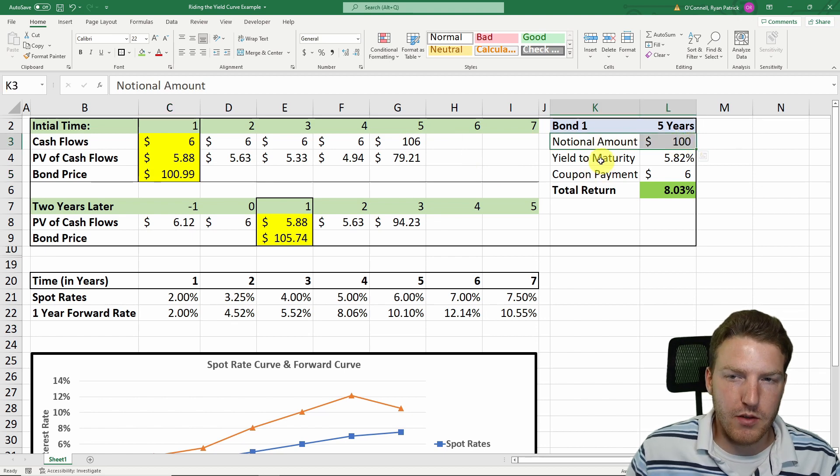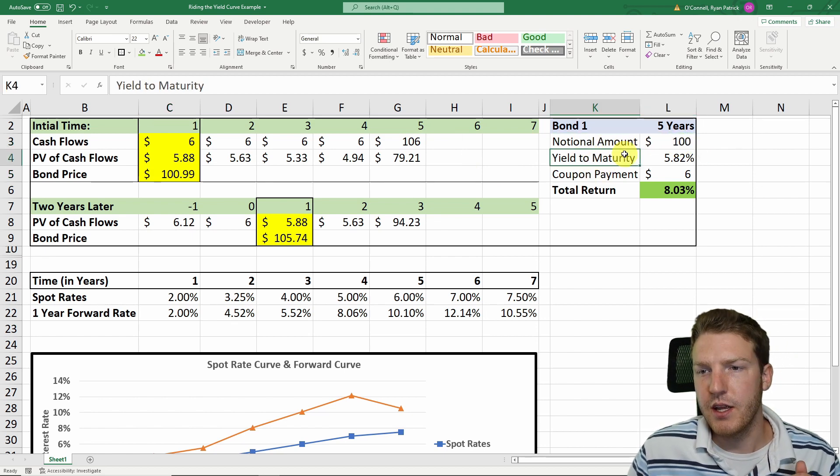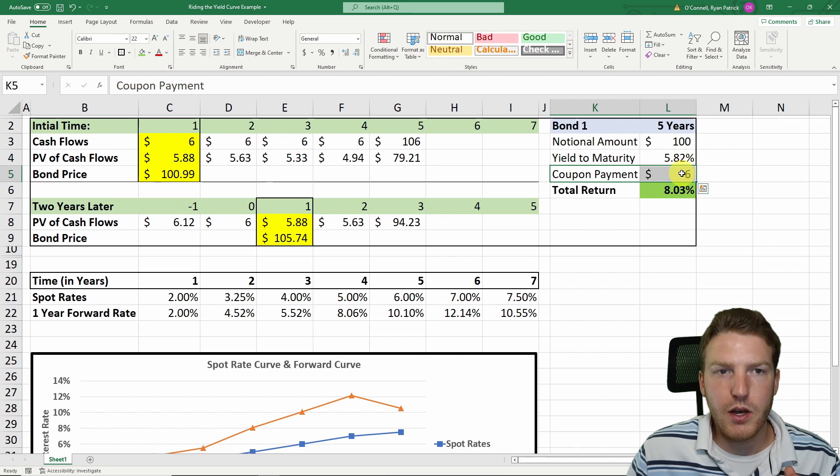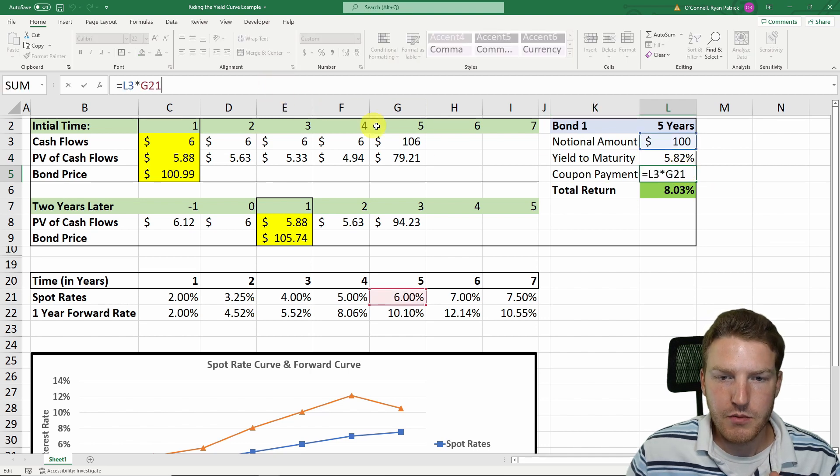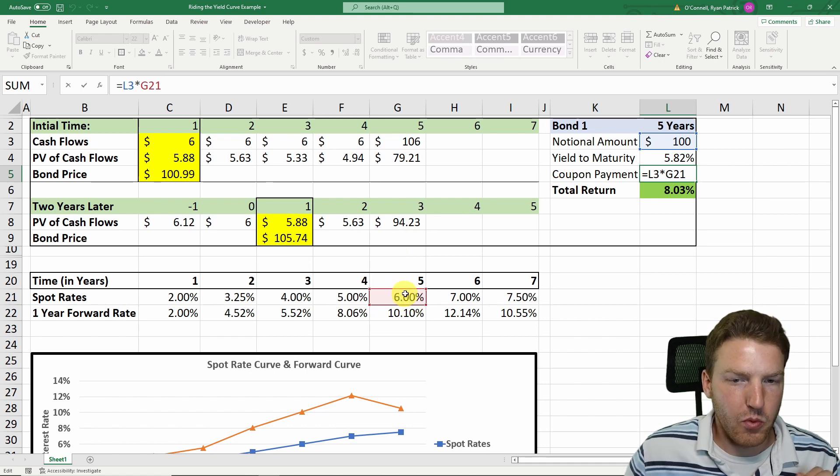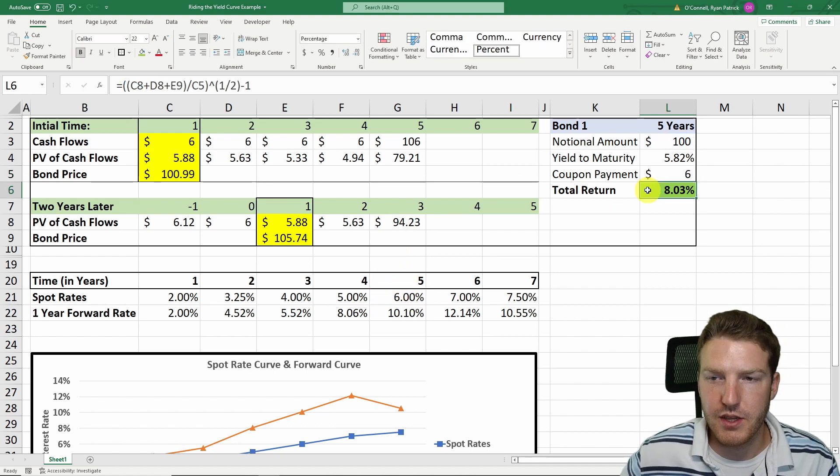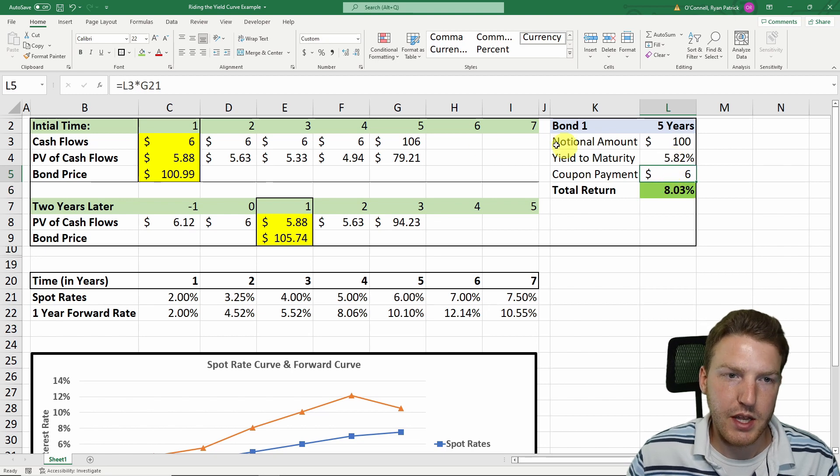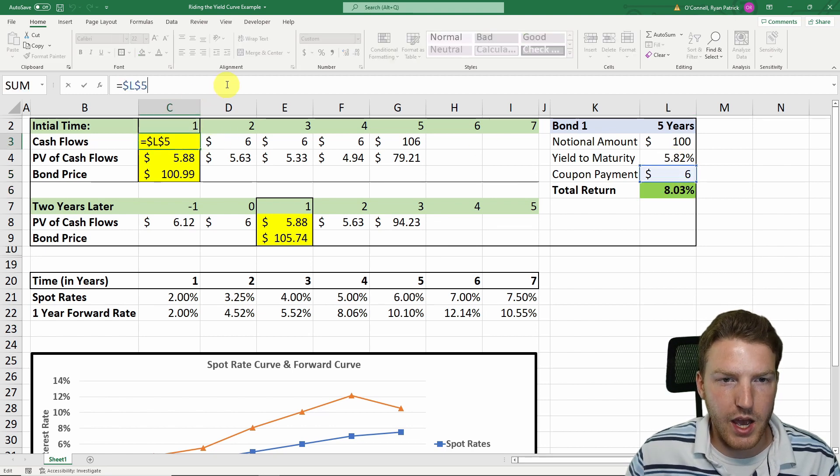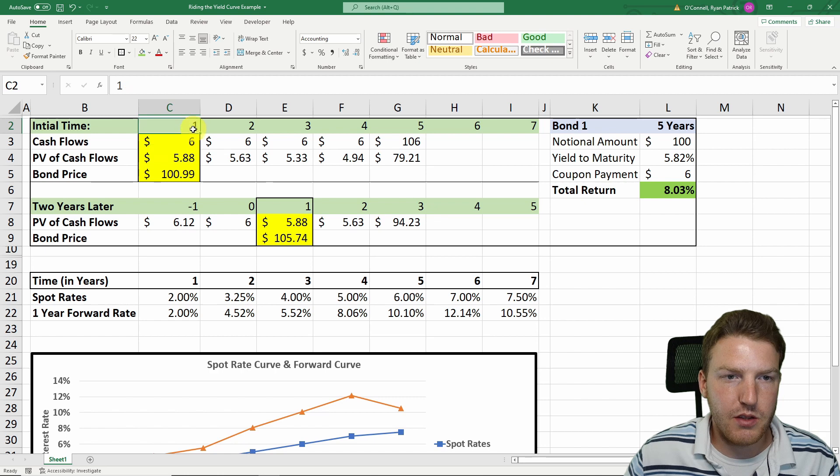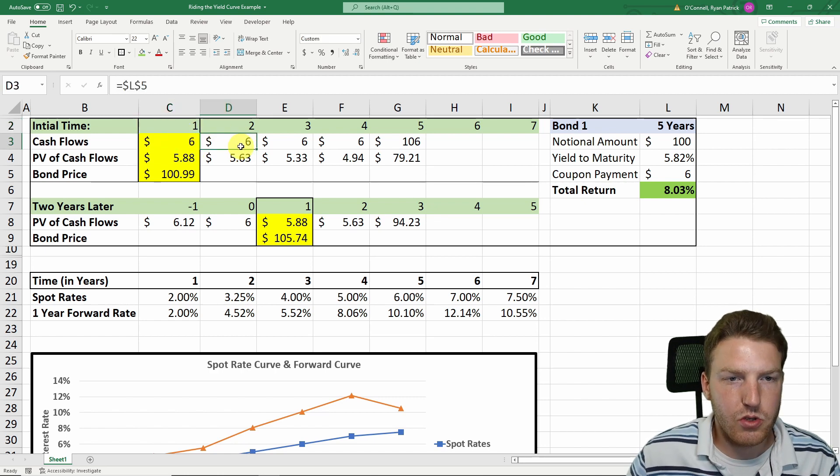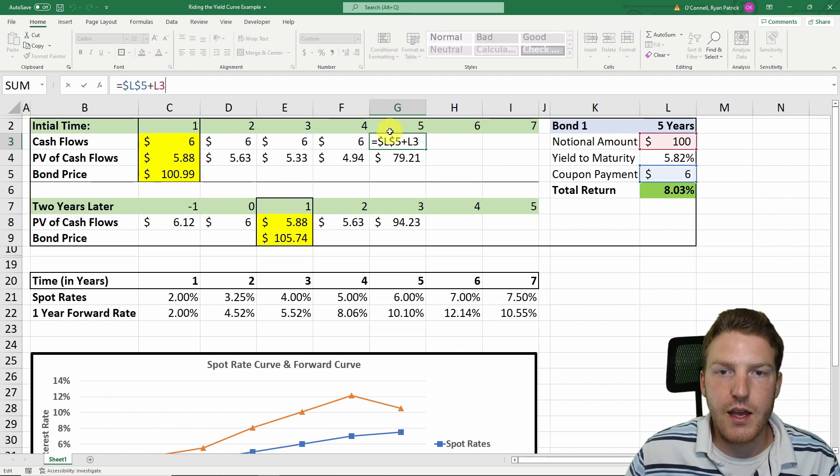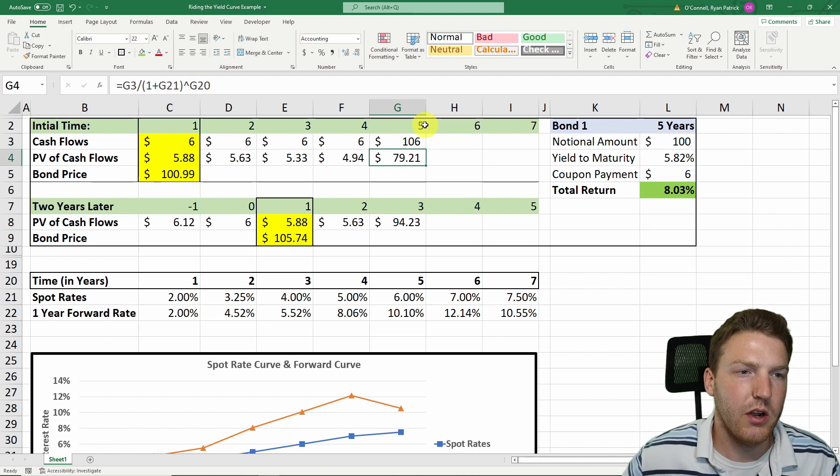We have a bond with a notional value of $100, and it pays a coupon rate of 6%. Because it's a five-year bond, we went to the spot rates. Whatever the spot rate was at five years, we said that's the coupon payment 6%. Then we took all those cash flows. In year one, we're going to get a $6 cash flow. In year two, $6. In year three, same with year four. But at the end of year five, we're going to get the $100 notional plus the $6 coupon.